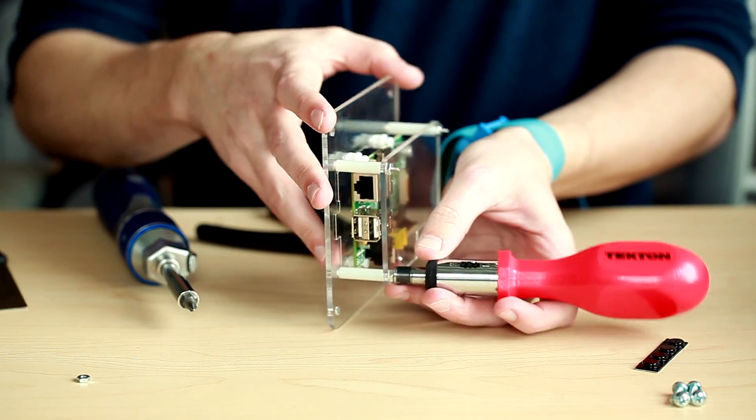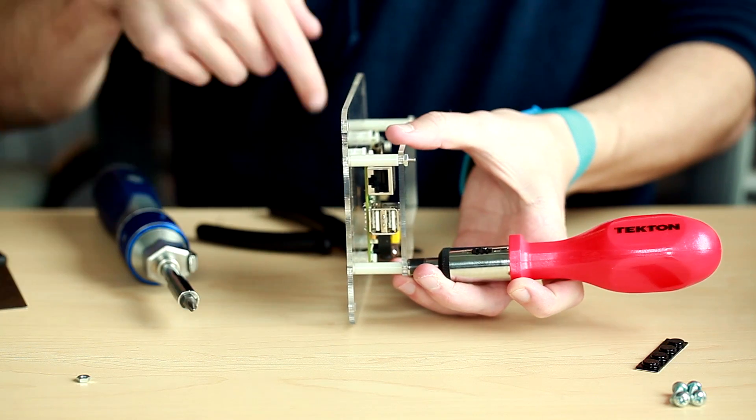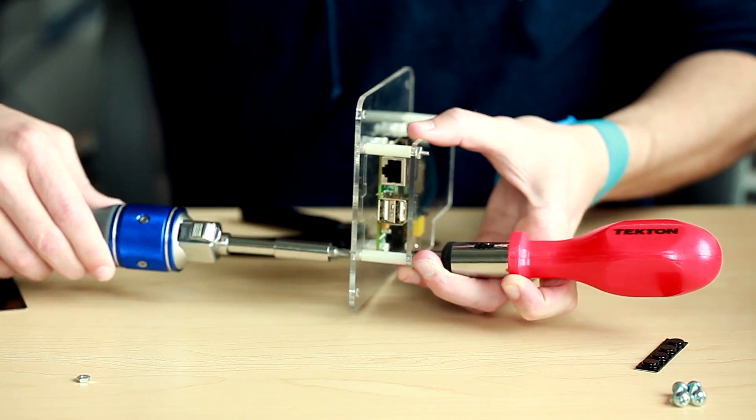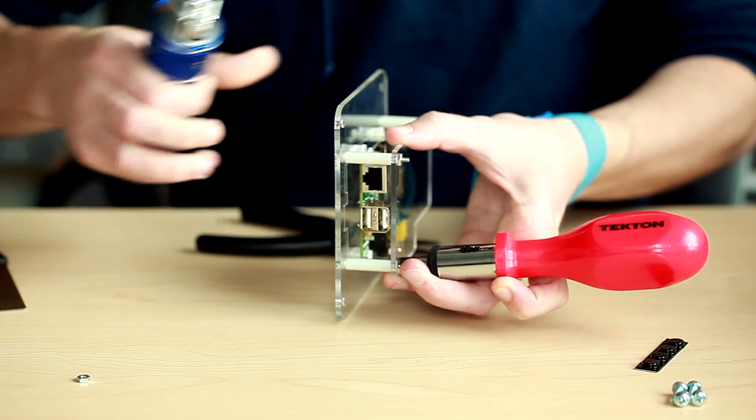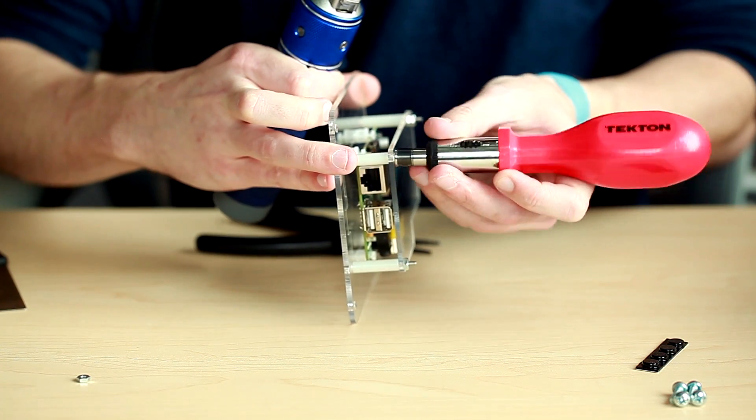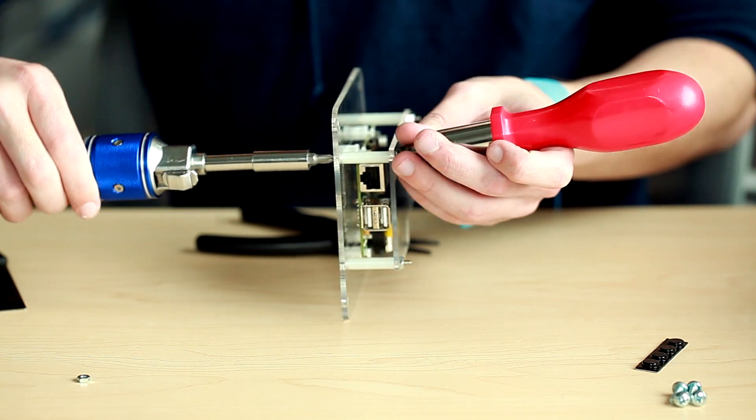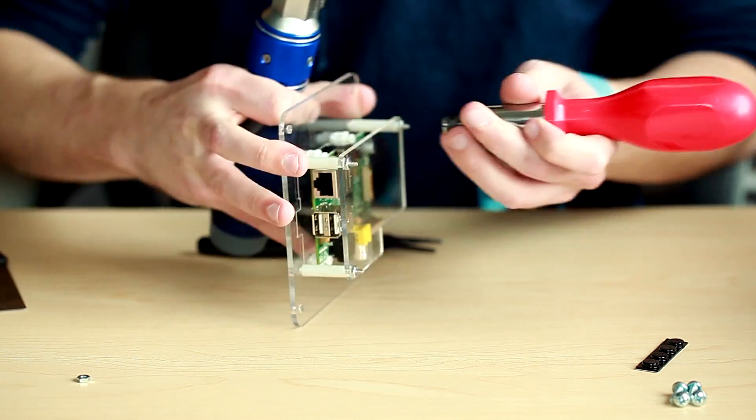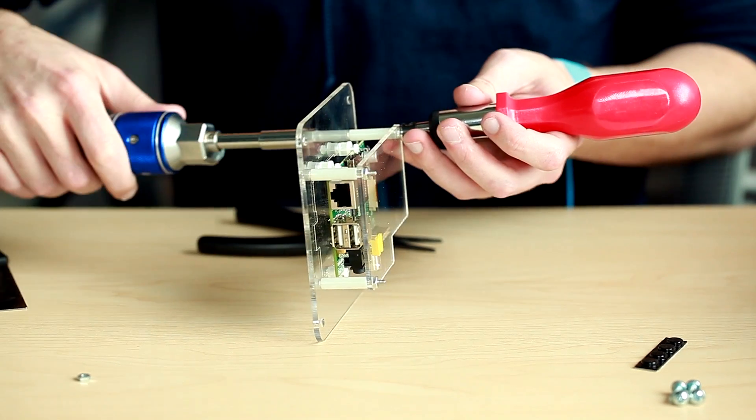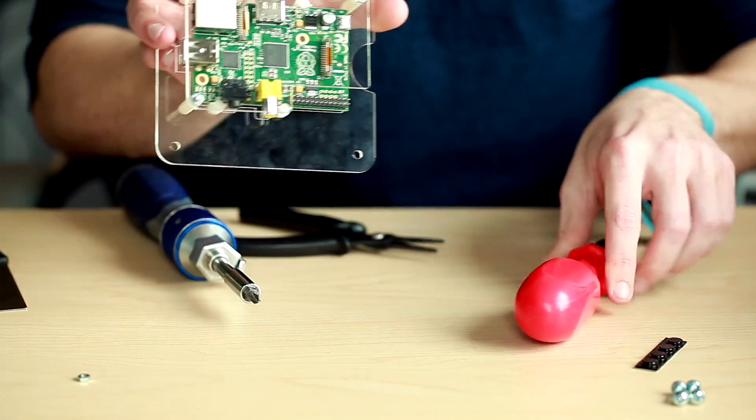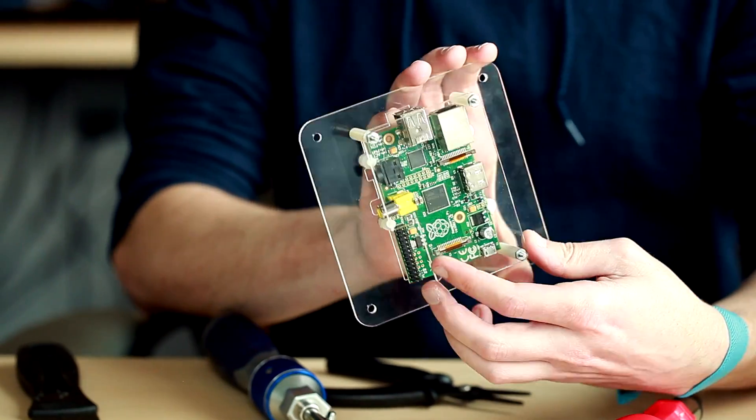Just hold the nut in place. You can also use your needle nose for this, but I find this to be much easier. And just make sure they're nice and secure. You don't want to do it too tight and potentially crack your plexiglass. At that point, the top cover is now in place.